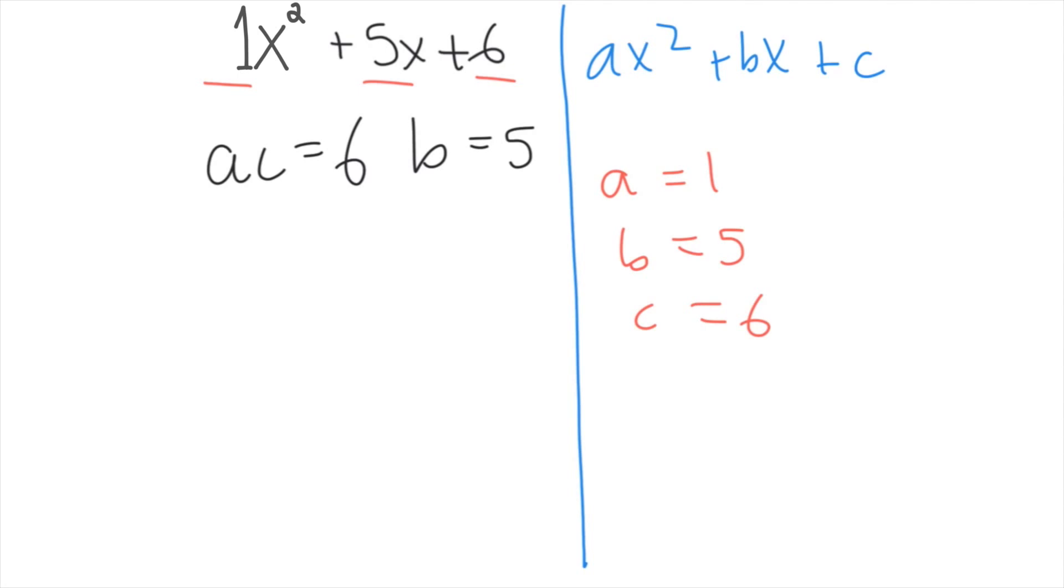So we make a factors list for 6 and check to see if any of the factors add to 5. Positive factors of 6 are 1 and 6, or 2 and 3. Now we look and see that 2 plus 3 is equal to 5, so 2 and 3 must be the right numbers.